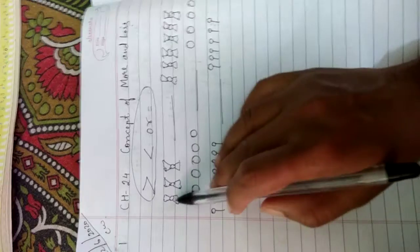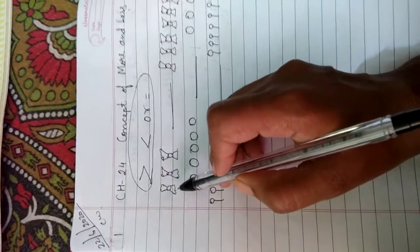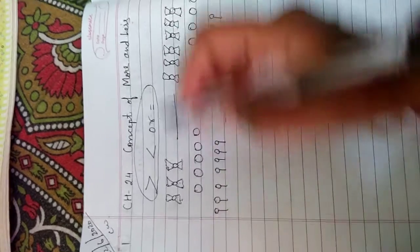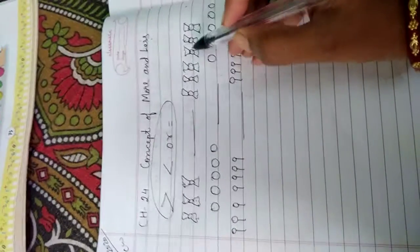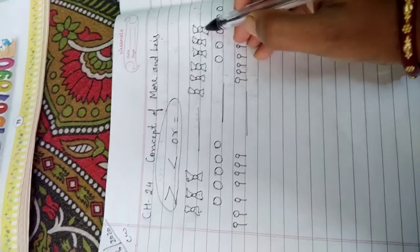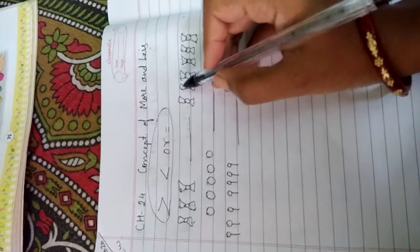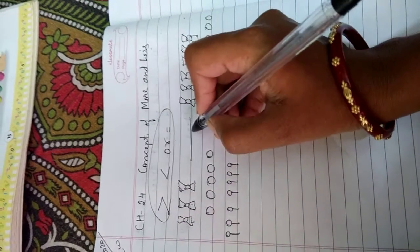See here, few chocolates are given here. So, count. How many chocolates are here? 1, 2, 3. And here, 1, 2, 3, 4, 5, 6. Here, 6 chocolates are there. So, where there is more chocolates, there the sign will be opened.